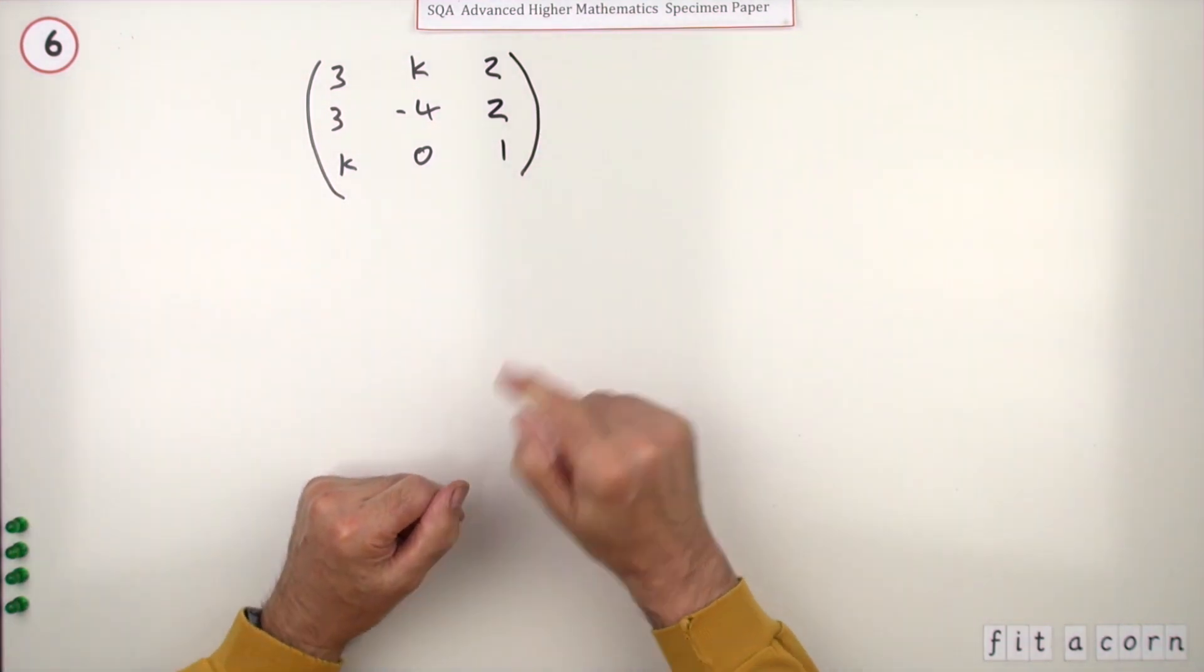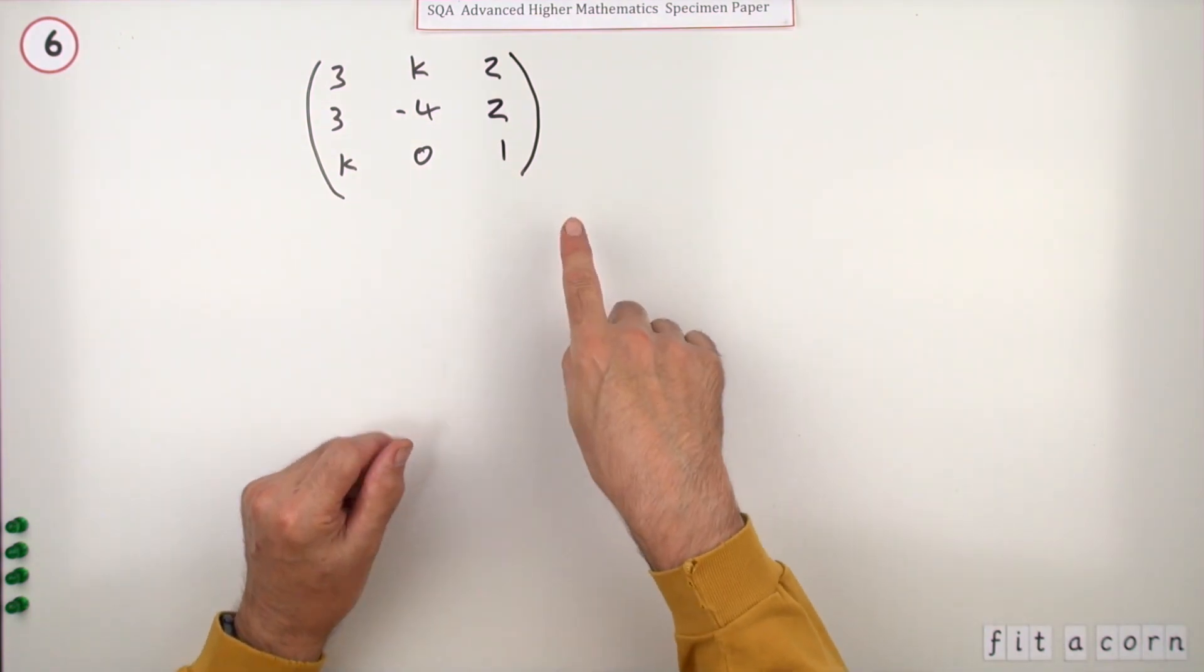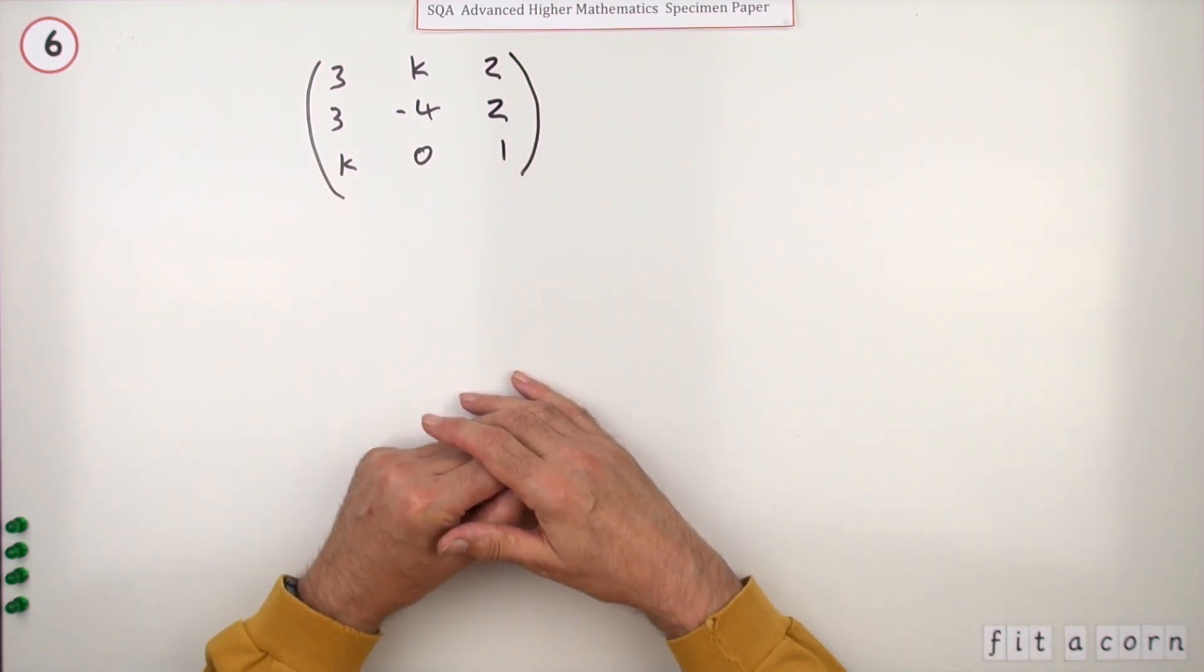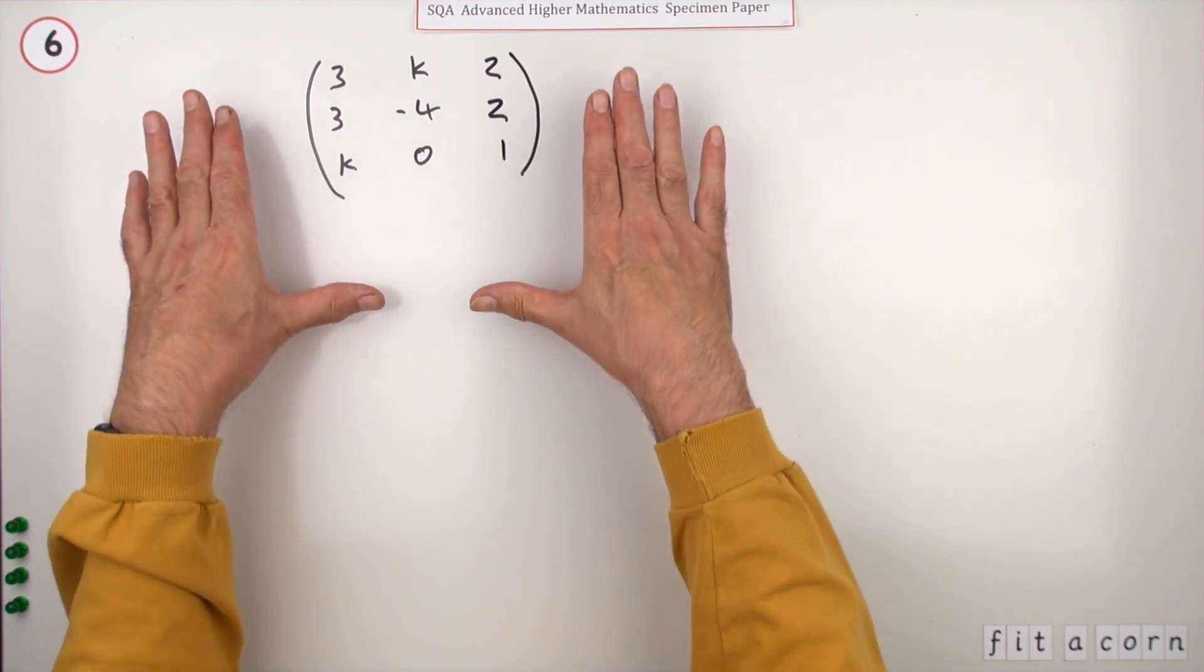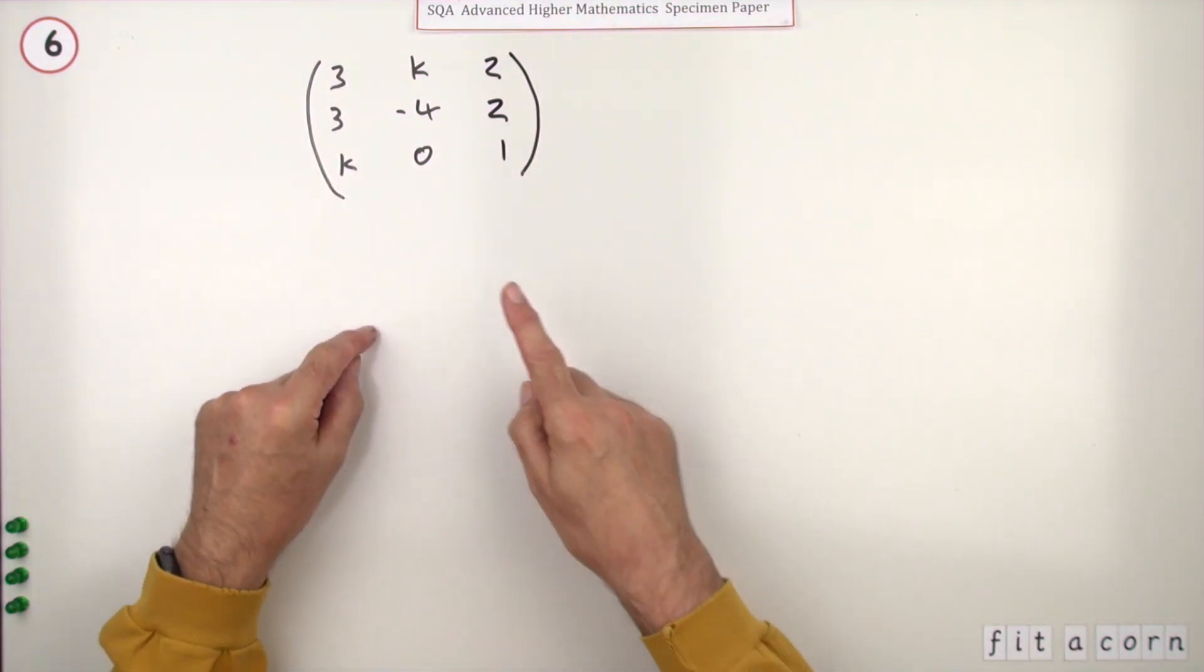Now you'd expect the first mark to be for stating that the determinant should be equal to zero, but they haven't got that down. To the third mark, the first mark starts when you start working out the determinant.